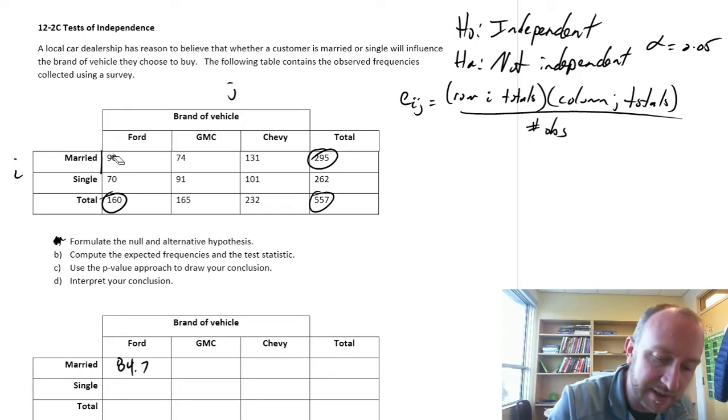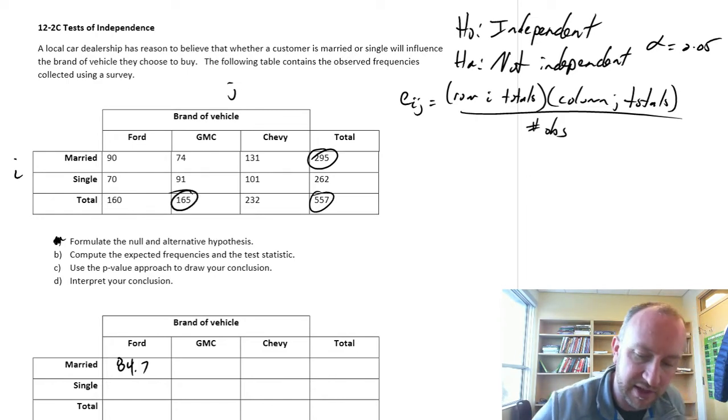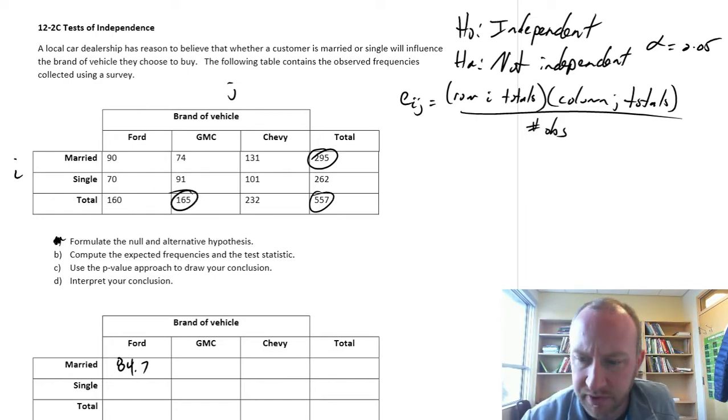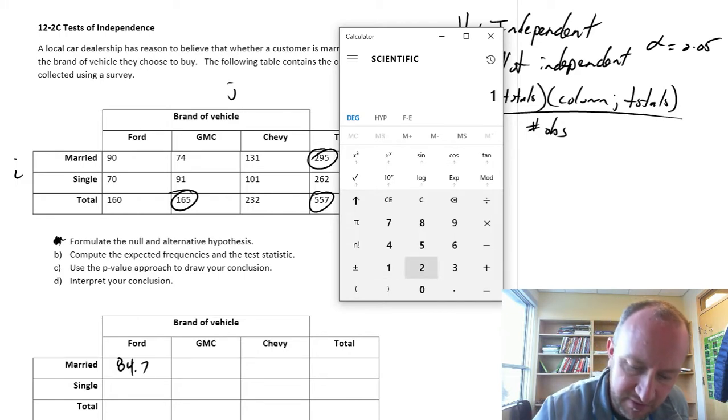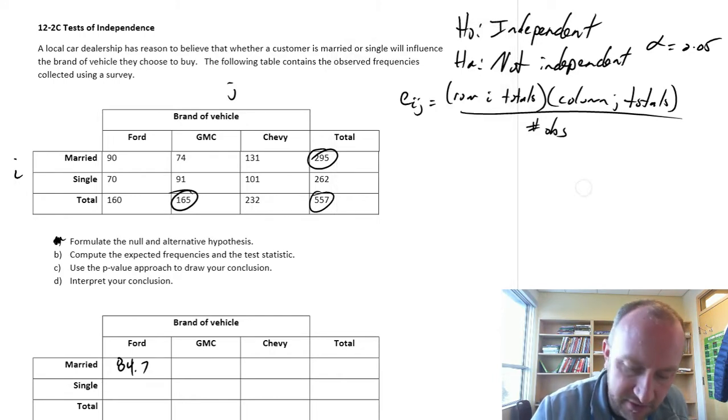So if we do the same thing then for GMC, well, we just move this over. Now we're looking at this column total. So 165 times 295 divided by 557, 87.4.